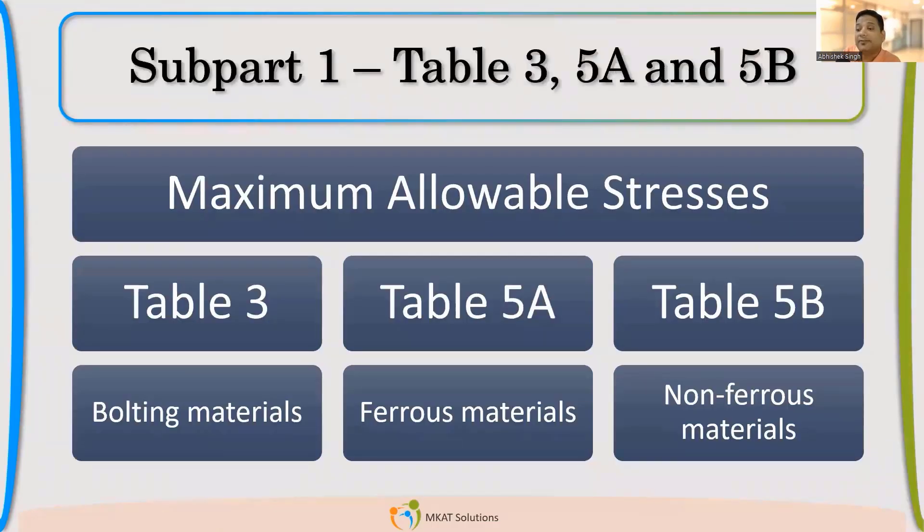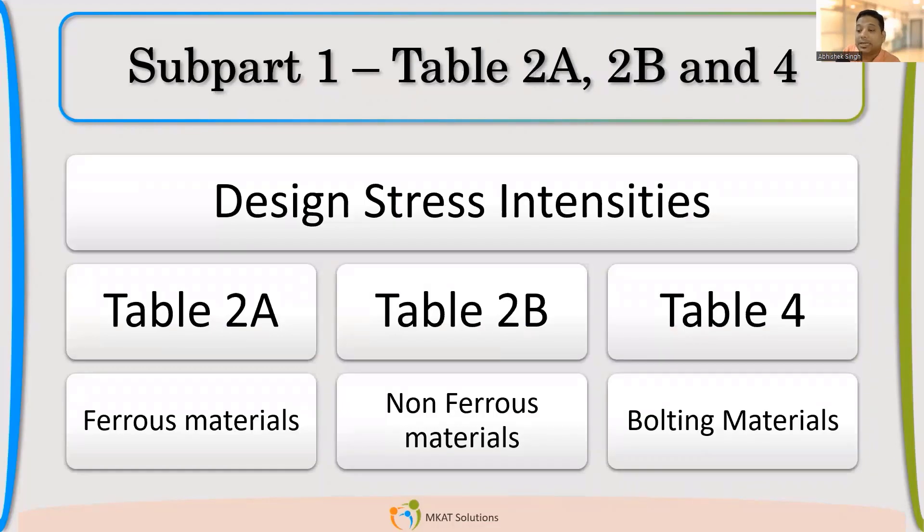Now, the Table 3, 5A and 5B. So Table 3, we saw that it is for bolting material. 5A and 5B - 5A is for ferrous, 5B for non-ferrous and it is for Division 2. Now there are two different things you might have noticed if you might have seen any time these tables. Like we discussed Table 1A, Table 3, Table 5A. These tables talk about maximum allowable stress. While these tables 2A, 2B, you will find design stress intensity. You won't find maximum allowable stress. You will find design stress intensity. Because that is how the allowable is defined in these codes.